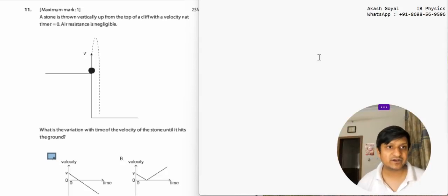Hello students, how are you? We have another question and the question says a stone is thrown vertically up from the top of the cliff with the velocity v at the time t equal to 0 and air resistance is negligible.